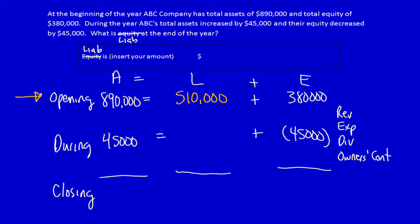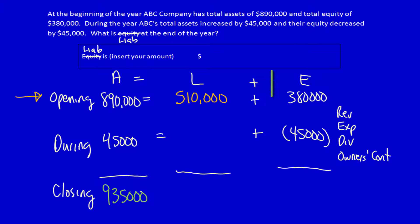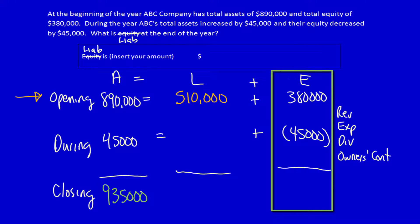Now I can solve the during row, but I could also solve some of the columns instead. Let's do the asset column: 890,000 plus 45,000 is equal to 935,000. Let's do the column for equity: 380,000 minus 45,000 is equal to 335,000.